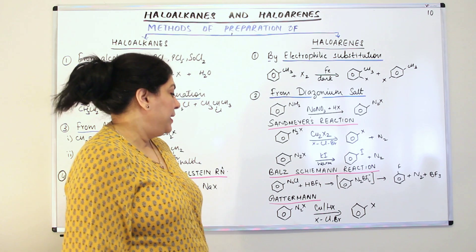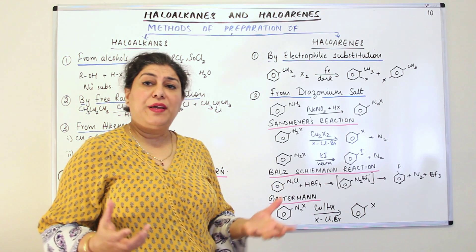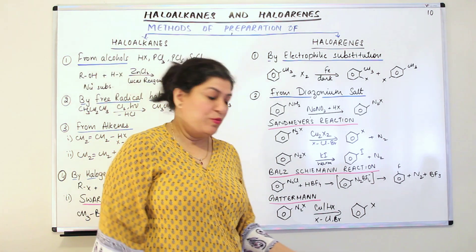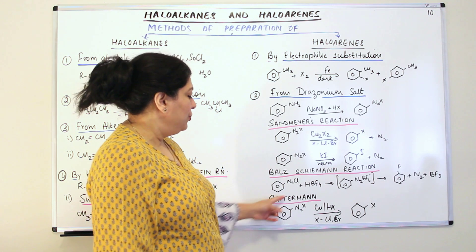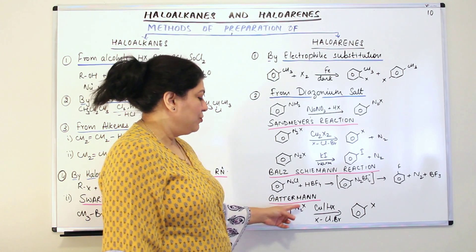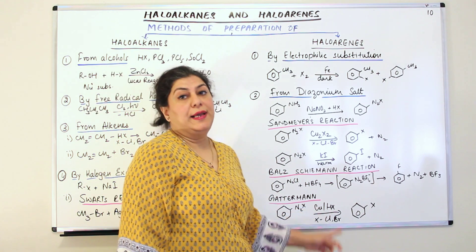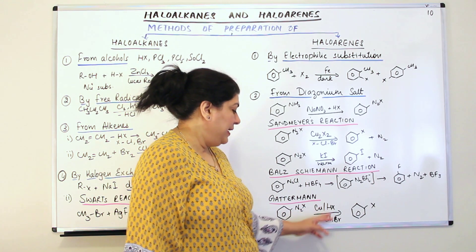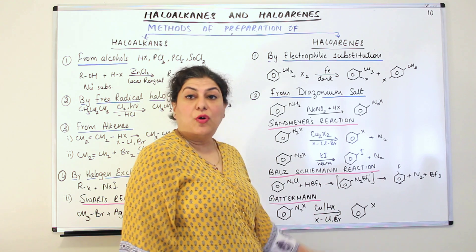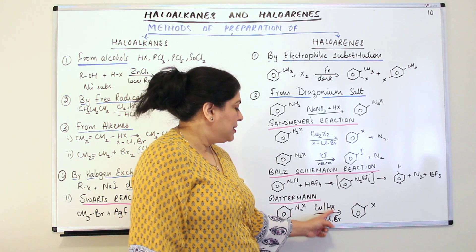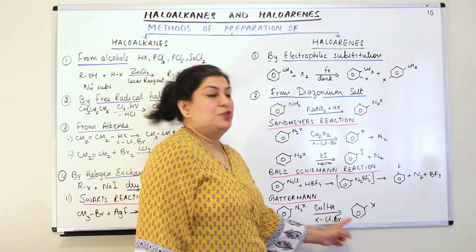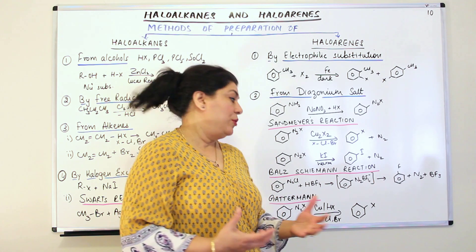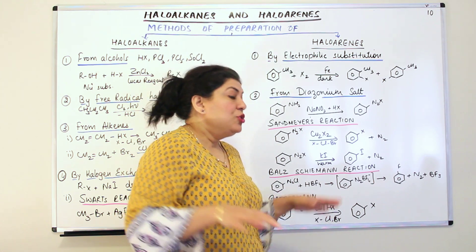In the Balz-Schiemann reaction, you take the diazonium salt and react it with HBF4. This gives an intermediate where Cl is substituted by BF4⁻, giving N2BF4⁻. Then N2 and BF3 are removed and you get the fluoro derivative. So the Balz-Schiemann reaction is used to get the fluorine derivative of benzene. The Gattermann reaction is another way of preparing the chloro and bromo derivatives, using the diazonium salt in the presence of copper and HX — where X is chlorine or bromine — and this X gets substituted on the benzene ring.